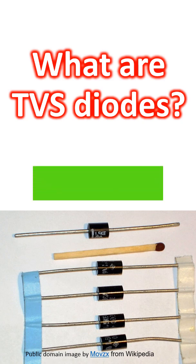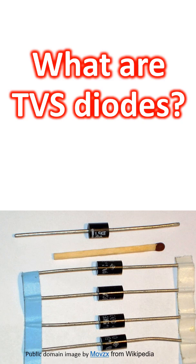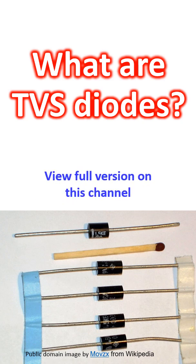Electron avalanche occurs when electrons are accelerated by electric energy and collide with atoms to create more mobile electrons and ions, which can lead to high currents beyond the breakdown voltage.